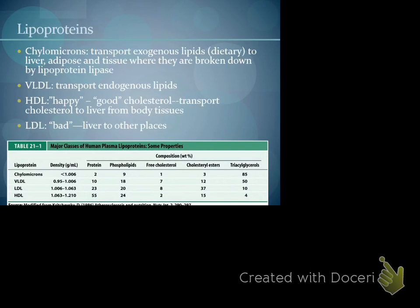HDL — I called it 'happy' so you can remember it's the good one. It transports the cholesterol to the liver from the body tissues. Whereas the LDL transfers the cholesterols and lipids from the liver to other places. The LDLs are the transport of endogenous lipids, the ones that you're making yourself. Whereas chylomicrons are usually indicative of the exogenous lipids, those from your diet. That's why you don't want to have too many chylomicrons either, because usually that means you have a really high, fatty diet.